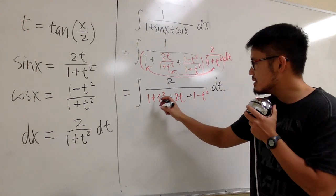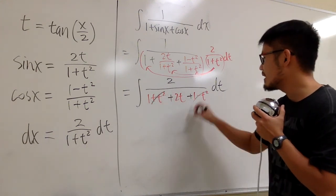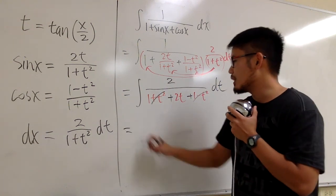You see, this is plus t squared, and this is minus t squared. Of course, cancel, cancel. And let's see what else we have.